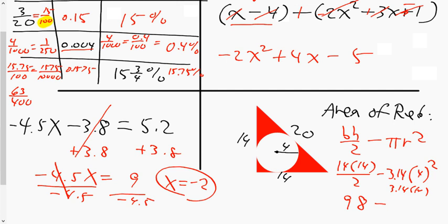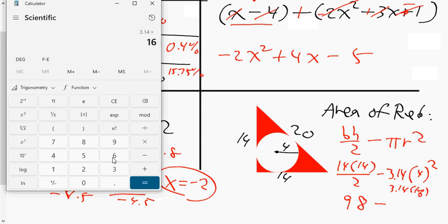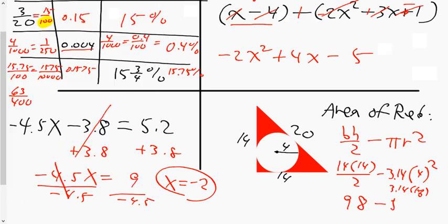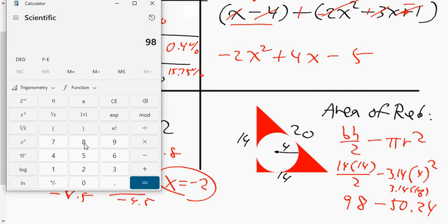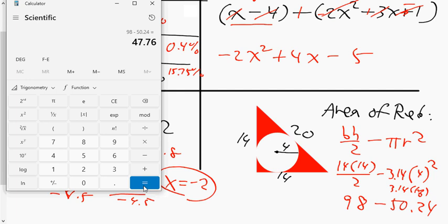Okay, I'm back. This is supposed to be 16 here but I got spooked. 3.14 times 16 is 50.24. When I take 98, the area of the red triangle, and subtract the area of the white circle—98 take away 50.24—your answer is 47.74 square units. I don't know if it's centimeters, so when you don't know, you just call it units squared, not centimeters squared.